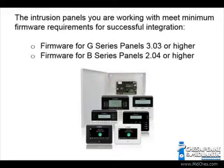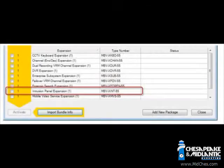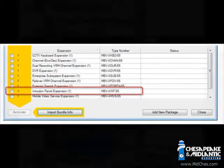Before you begin integration, remember the intrusion panels you are working with must meet minimum firmware requirements. G-series panels must have firmware 3.03 or higher installed. It is recommended that B-series panels have a minimum of 2.04 or higher installed.